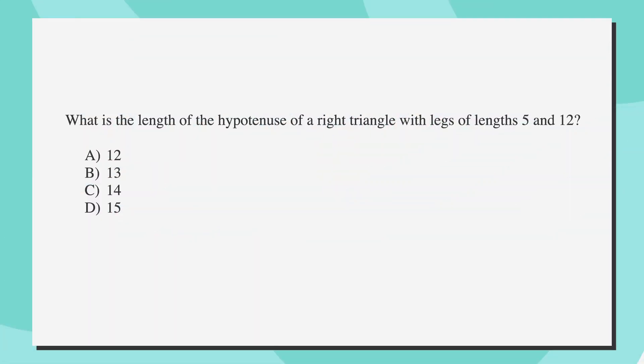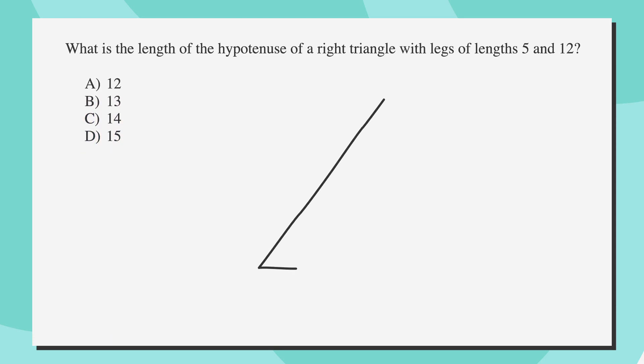What is the length of the hypotenuse of a right triangle with legs of lengths 5 and 12? Here are your answer choices: A) 12, B) 13, C) 14, and D) 15. Let's draw a right triangle to make this easier on ourselves. According to the question, we know that the triangle has legs of lengths 5 and 12.